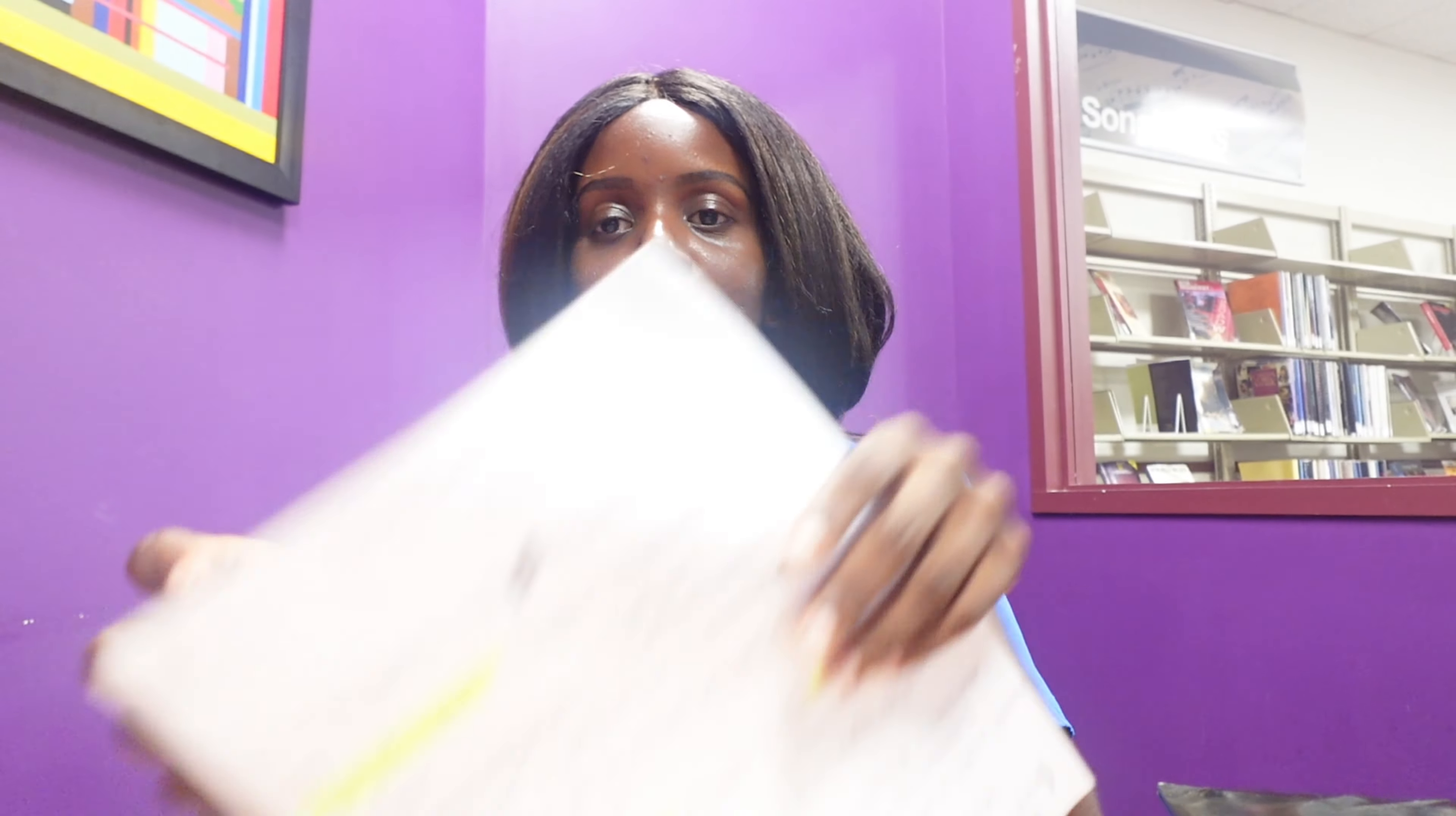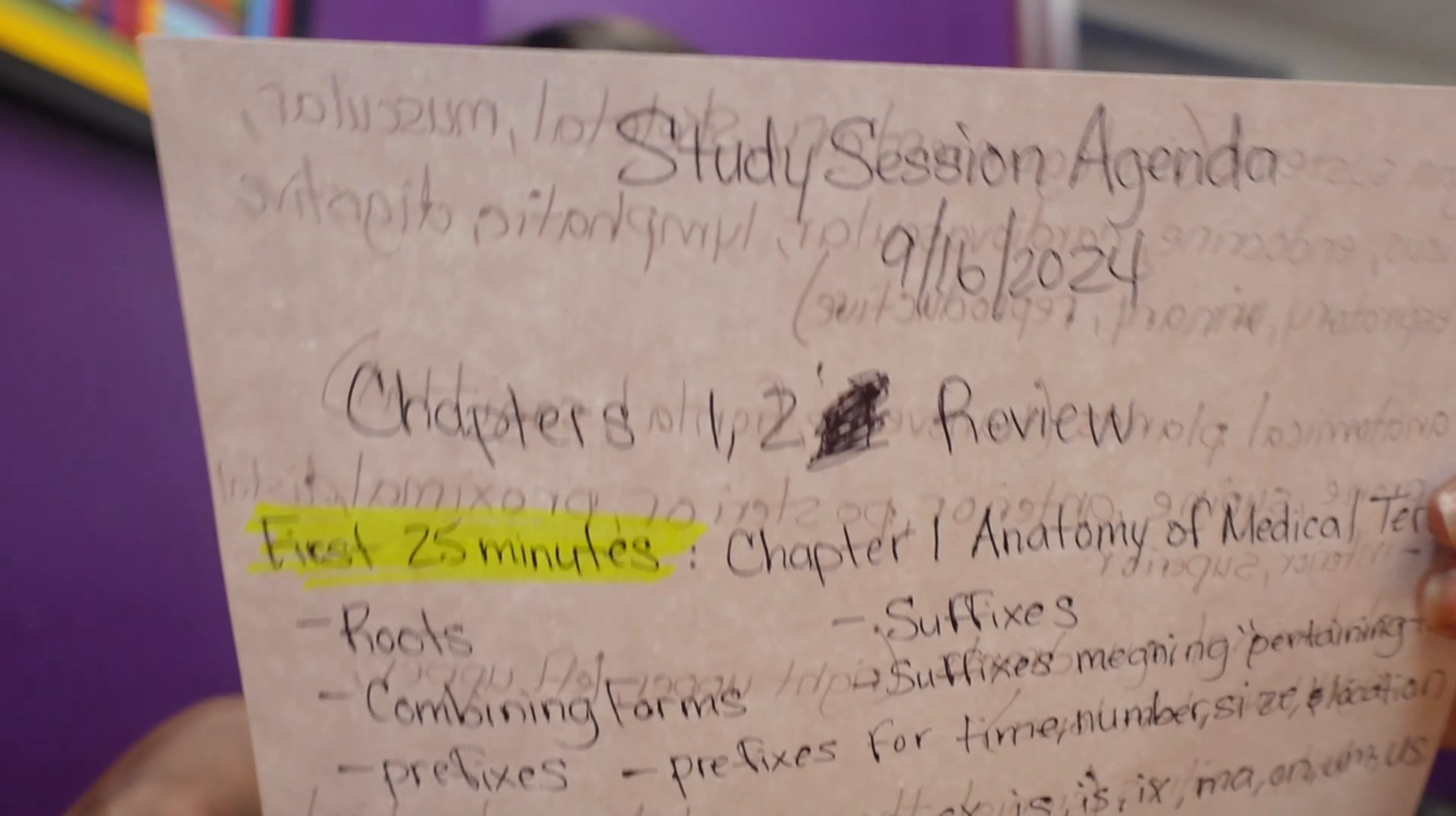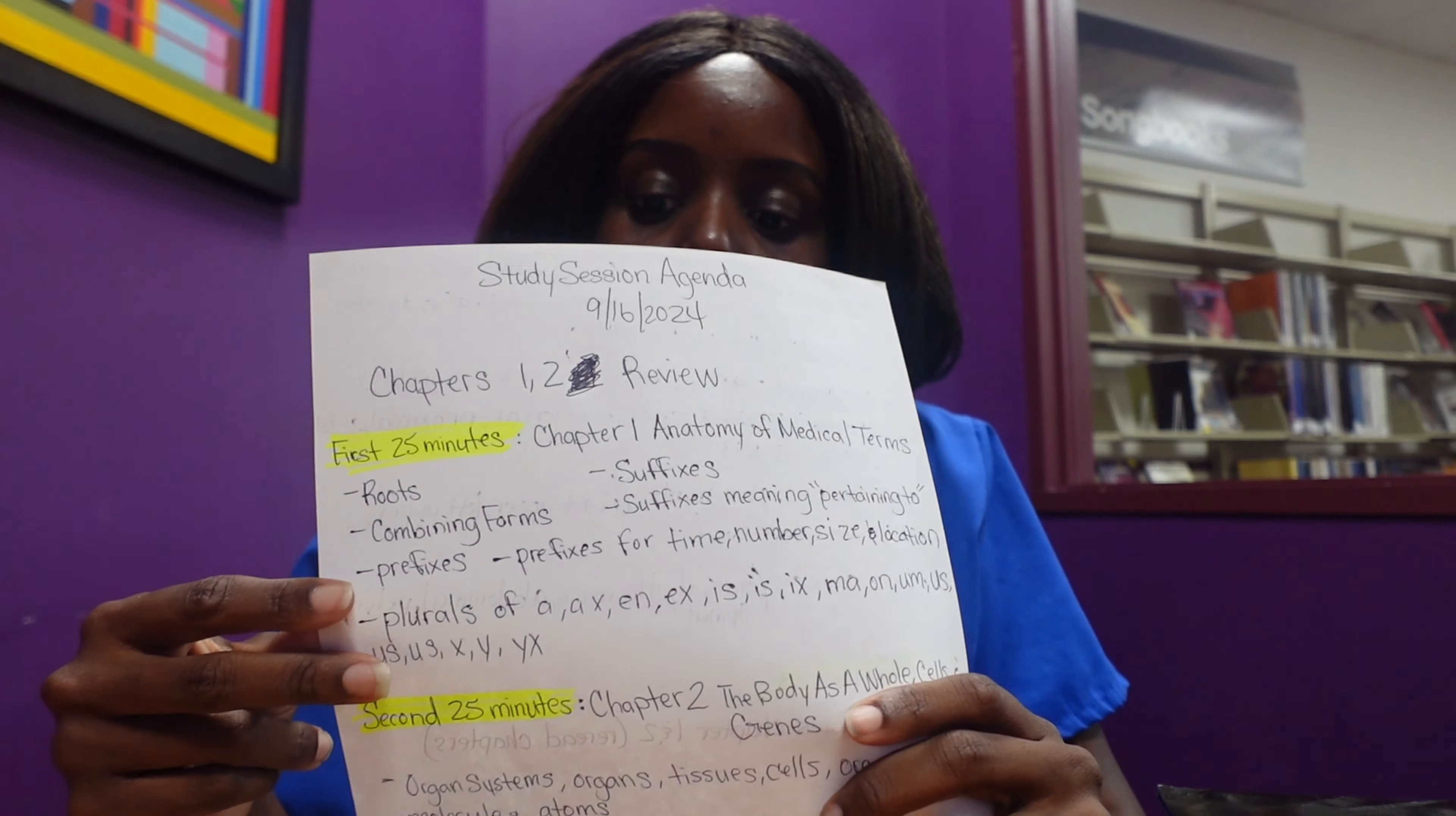I'm going to start off with chapter one. I wrote an agenda of everything I have to do, which is a lot to cover. I'm just going to break it up into 25-minute intervals and take a break in between. I have the room for two hours today, but I'm only covering two chapters.